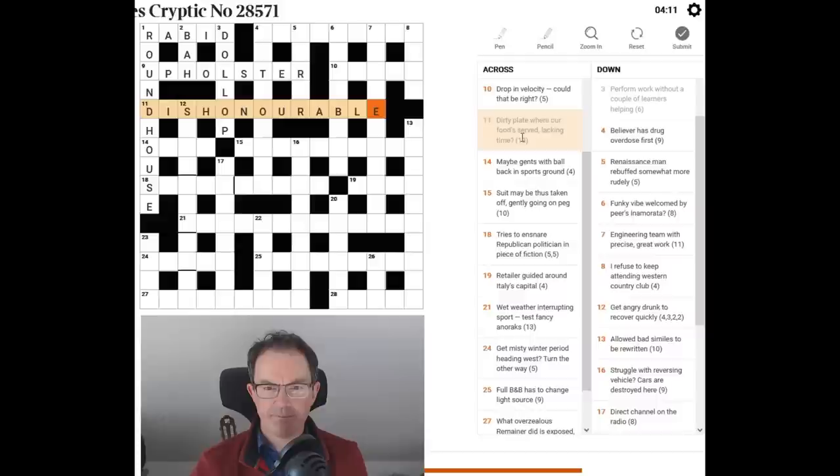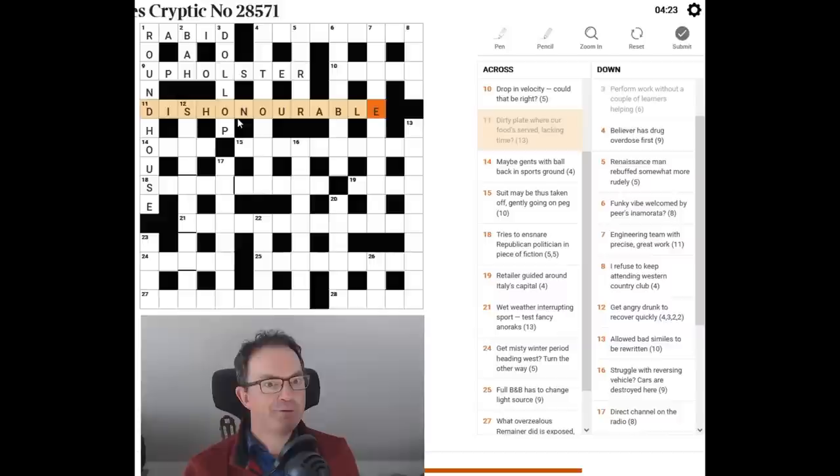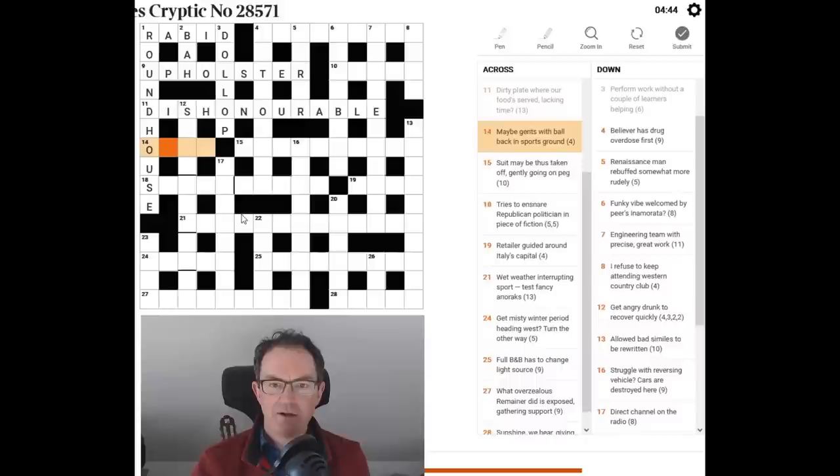So dirty. It is. It's actually very clever. So the dish on our table would be the plate on which our food is served. Wouldn't it? The dish on our table. And if we split dishonourable up you can say we get dish on our and then able. And that is because it lacks time. It lacks the letter T. So that's very cute. So dirty is dishonourable. And then plate where our food's served. Dish on our table without the T. Very cute.